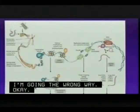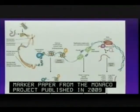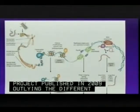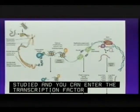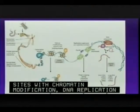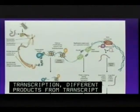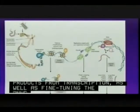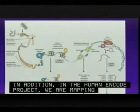This figure from the marker paper from the modENCODE project, published in 2009, outlines the different functional elements being studied in modENCODE. These include transcription factor binding sites, histone and chromatin modifications, DNA replication sites, the sites of transcription, different products from transcription, as well as fine-tuning the annotation of the genome. In the human ENCODE project we're also mapping chromatin structure using DNase hypersensitivity mapping as well as DNA methylation.